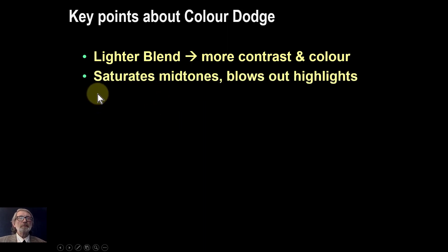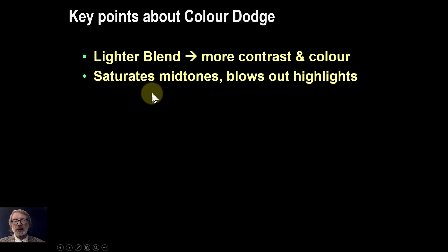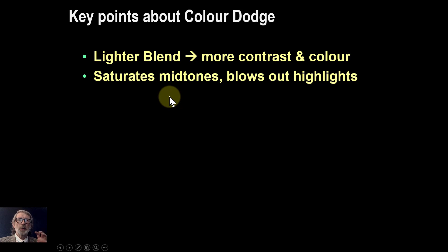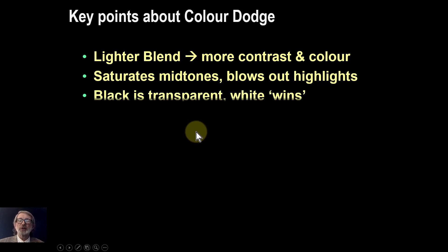It saturates the midtones — we saw that in the grass and trees in the first picture — but it blows out the highlights, so the skies will just go white. Often you want to constrain it; you could use blend ranges to do that.